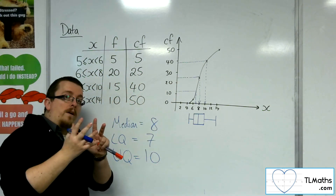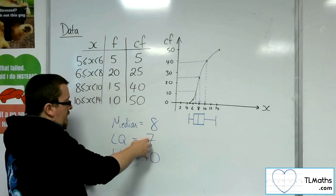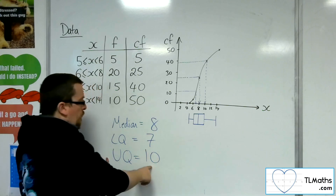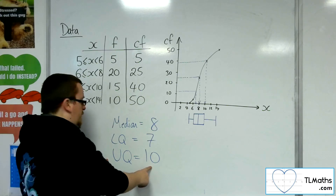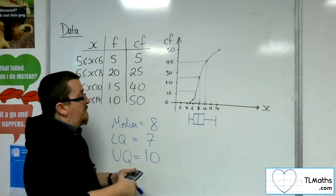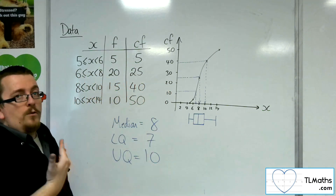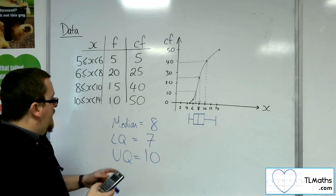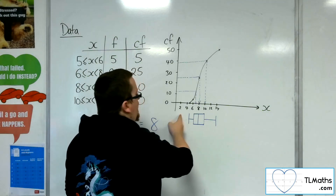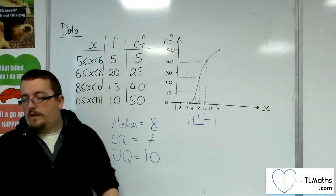If you're thinking about outliers, the upper quartile minus the lower quartile gives an IQR of 3. The upper quartile plus 1.5 times 3 gives 10 + 4.5 = 14.5 — but since there's no value beyond 14, there's no point drawing the whisker to 14.5. The lower quartile minus 1.5 times the IQR gets you down to 2.5, but there's no value less than 5, so it doesn't make sense to draw the whisker that far down.